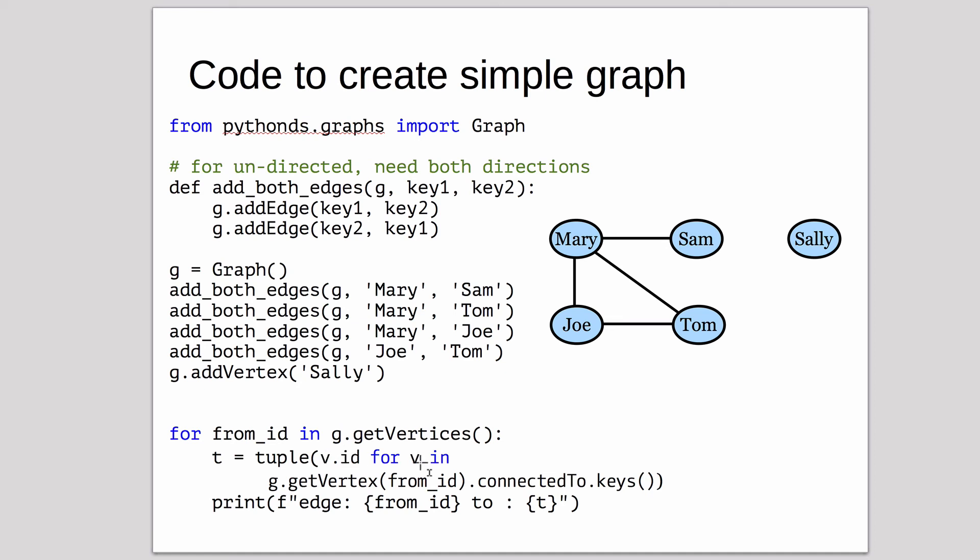It looks up the ID for vertex in the list of connected to vertices that are in the from vertex. You can look at that, figure it out, and then it prints it out. It prints out edge from ID to, and the list of connections.